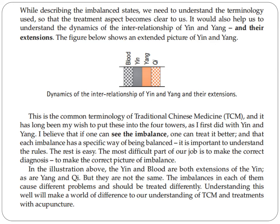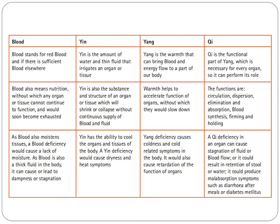The imbalance in each of them causes different problems and should be treated differently. An understanding of this will make a world of difference in our understanding of TCM and treatment with acupuncture. First, we have the blood. The blood stands for red blood and sufficient blood. Blood also means nutrition, without which any organ or tissue cannot continue to function and would soon become exhausted. As blood also moistens tissue, a blood deficiency would cause a lack of moisture. As blood is also a thick fluid in the body, it can cause or lead to dampness or stagnation.